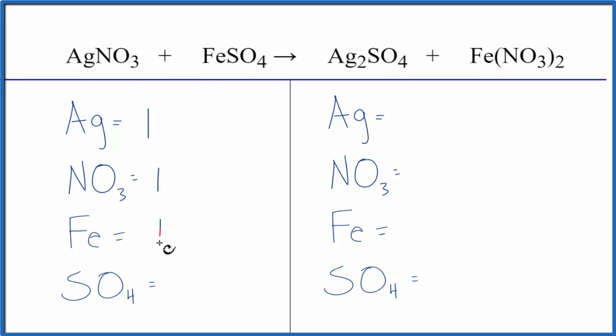We have one iron atom, and then we have an SO4, that's a sulfate. We have one here, we have a sulfate here, so we can call the SO4, the sulfate ion, one thing.